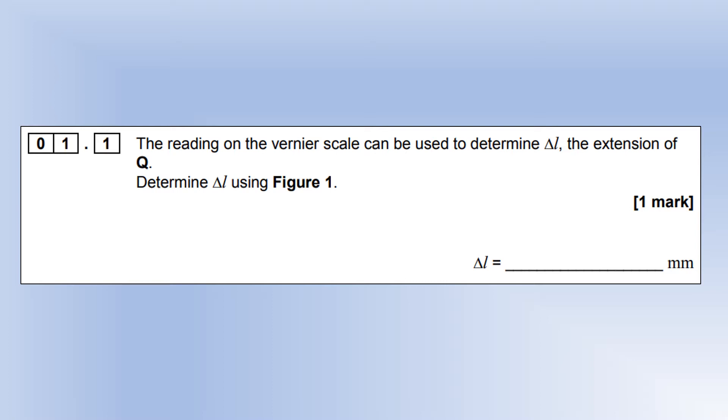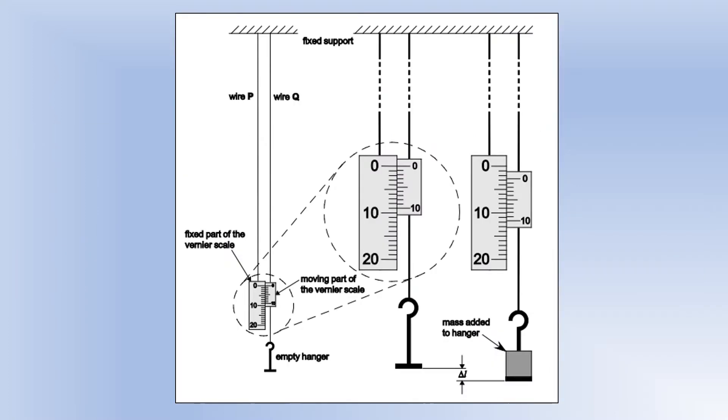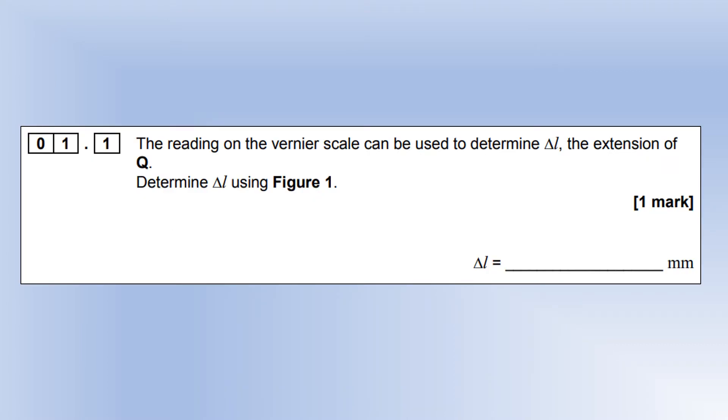Using the diagram, the first thing I'm looking for is where the zero on the vernier scale is - it's just gone past the second division, which means 2 millimeters. The next thing I'm looking for is the division on the vernier scale which best matches up with the main scale, which is the seventh division. So the reading on the vernier scale is going to be 2.7 millimeters.